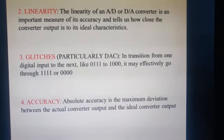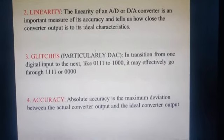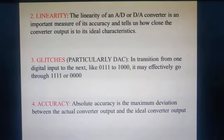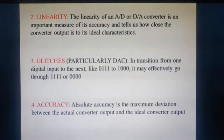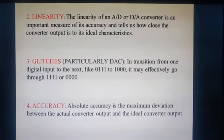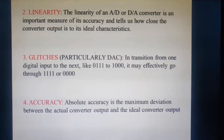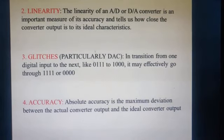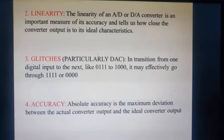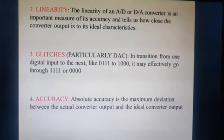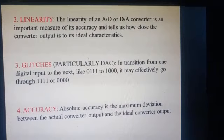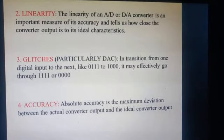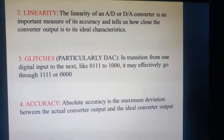The next specification is linearity. The linearity of an ADC or DAC converter is a measure of its accuracy, and it tells how close the converter output is to its ideal characteristics. For example, if the analog input signal is 3.3 volts, the output of the digital signal ideally should be 3.3 volts. But if we use a flash type ADC, instead of getting 3.3 volts, we will be getting the equivalent as 0b011 which is equivalent to 3. So ideally it should be 3.3 but practically we are getting 3. That itself indicates how accurate it is with respect to the ideal characteristics versus practical characteristics.